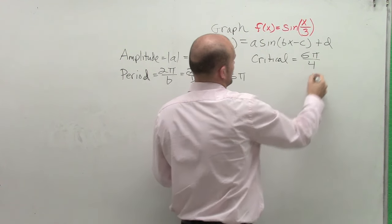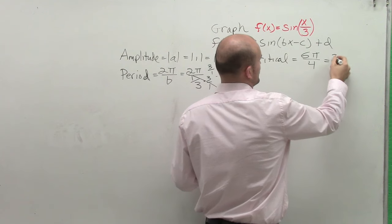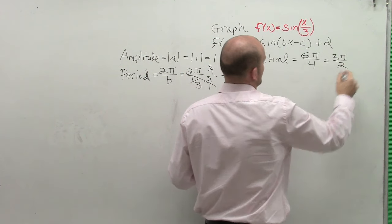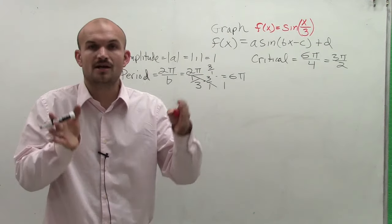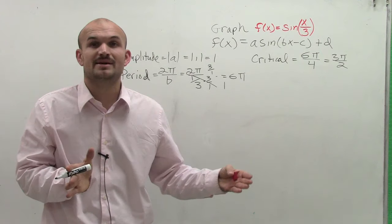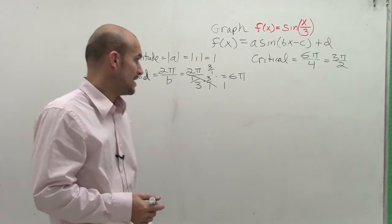Which ends with giving us 3 pi over 2. So therefore, every interval of critical points is going to be a distance between each other of 3 pi over 2.